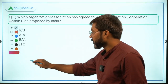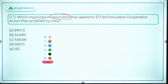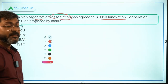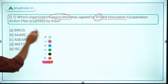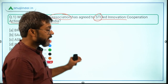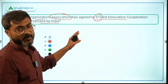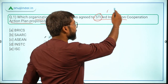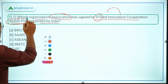Let's talk about the first question: which organization or association has agreed to the STI-led innovation cooperation action plan? STI stands for Science, Technology and Innovation. This plan was proposed by India — you have to remember that. The name of the plan is the STI-led Innovation Cooperation Action Plan.